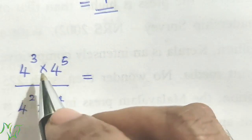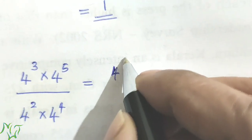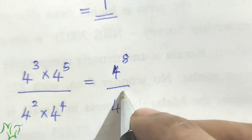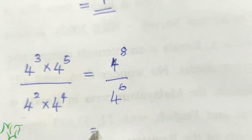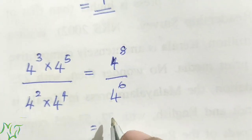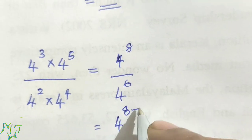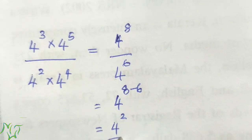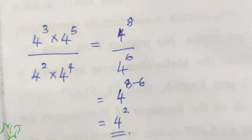Next question: 4 cubed into 4 raised to 5, by 4 squared into 4 raised to 4. Using the multiplication rule in both numerator and denominator: numerator is 4 raised to 8, denominator is 4 raised to 2 plus 4, which is 6. The power in the numerator is bigger, so we use the first division rule and get 4 squared.